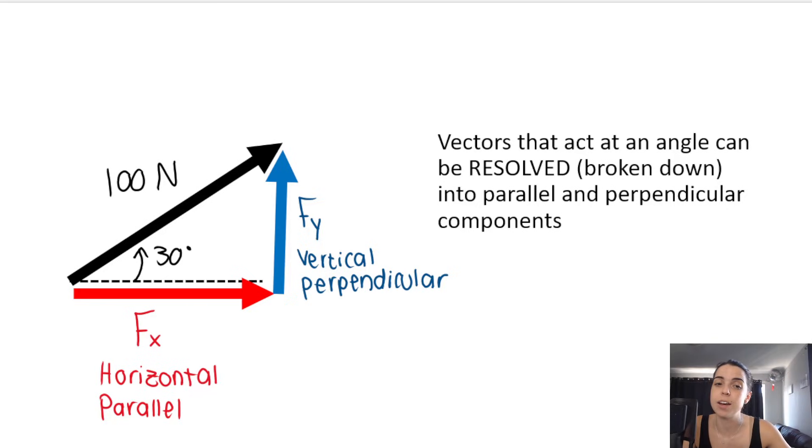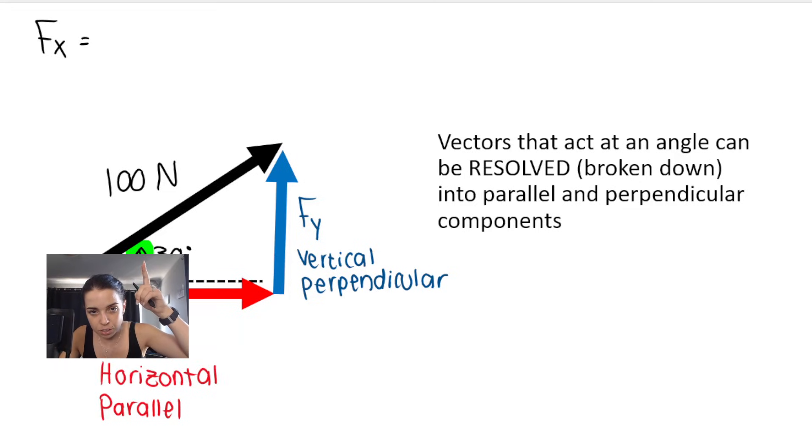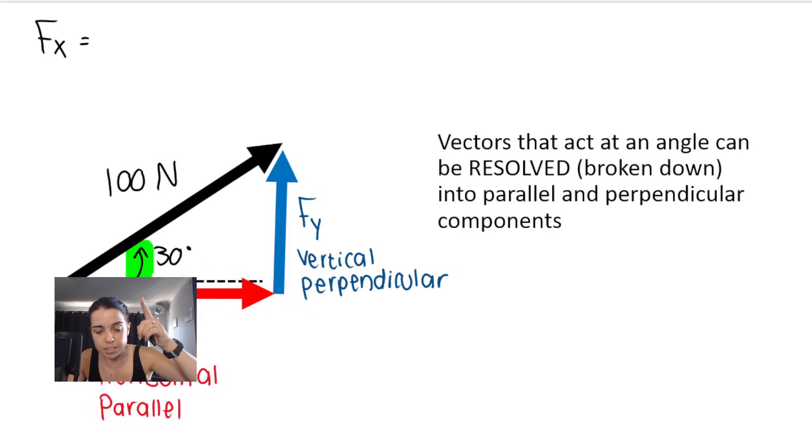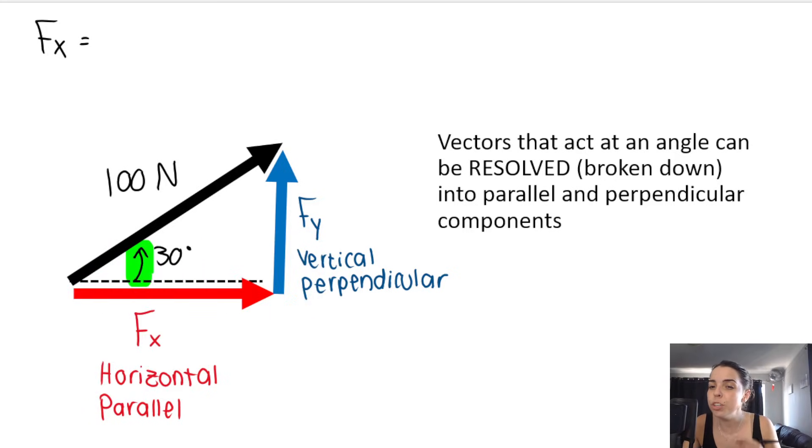Now, if I ask you to break it down into its components, some teachers teach it like this. They say, to find the x component, look at where the angle is. The x component is adjacent to the angle. Here's the angle, here's the component I'm looking for. Do you see that it's adjacent? It's next to, not opposite. It's adjacent, it's next to. And which trig ratio uses adjacent?